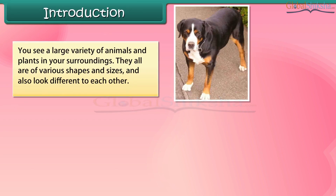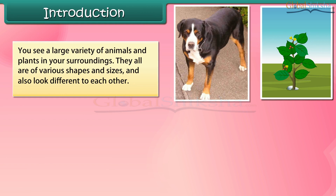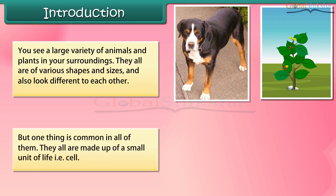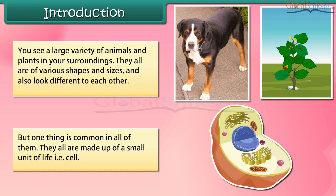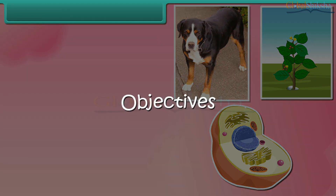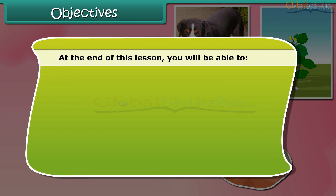You see a large variety of animals and plants in your surroundings. They all are of various shapes and sizes and also look different from each other. But one thing is common in all of them — they all are made up of a small unit of life, that is, the cell. In this module we are going to learn about the cell and its structure.